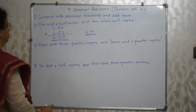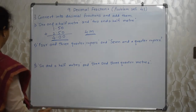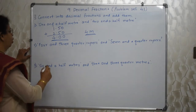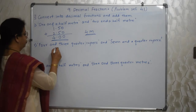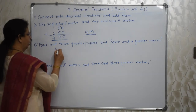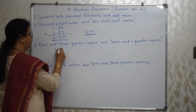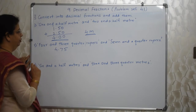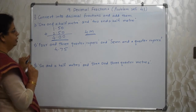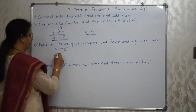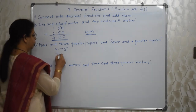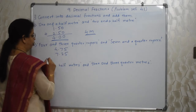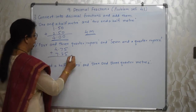So let us write answer in meters. Aage baarte hai. 4 and 3 quarter rupees. 4 and 3 quarters — that is 0.75 (i.e., 4.75). And 7 and a quarter rupees — 7 and a quarter, that is 0.25 (i.e., 7.25). Add karte hai.